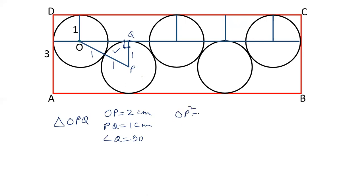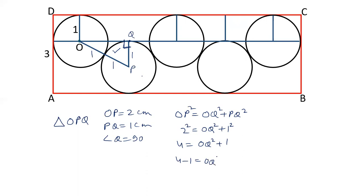OP squared equals OQ squared plus PQ squared. OP is 2, OQ we have to calculate, and PQ is 1. So 2 squared is 4, and 4 minus 1 gives OQ squared equals 3. Therefore the length of OQ is square root of 3. Similarly, if we name this point as R and join PR, the length of QR will also be square root of 3.